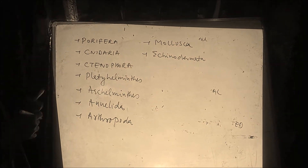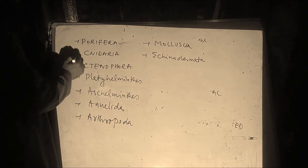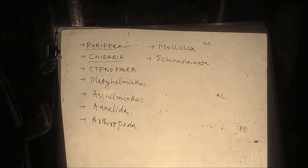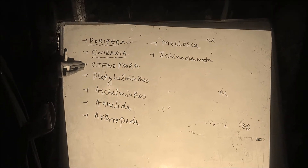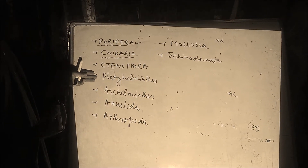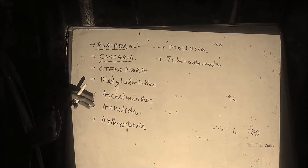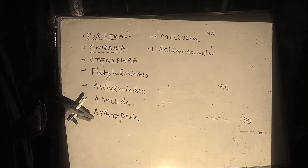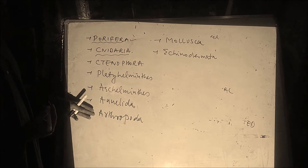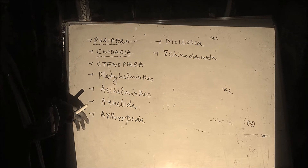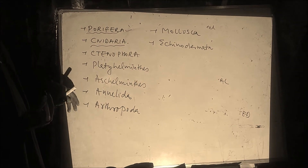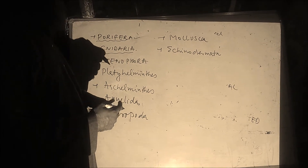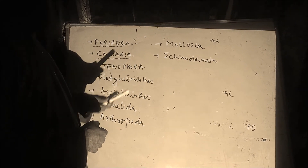These are the Non-Chordate groups: Porifera, commonly called sponges; Cnidaria, also known as Coelenterata; Ctenophora, commonly called comb-jellies; Platyhelminthes, known as flatworms; Aschelminthes, known as roundworms; Annelida, which includes earthworms and leeches; Arthropoda, having jointed feet, which includes insects, scorpions, and prawns; Mollusca, which includes octopus and snails; and Echinodermata, which includes starfishes.